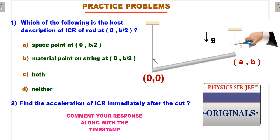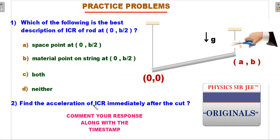The options are: (A) it is a space point — a fixed point at (0, b/2) in space; (B) it is the material point on the string at that location; (C) it is both — it doesn't matter whether you describe it as a space point or a material point, the property of ICR remains the same; or (D) neither of the two descriptions is correct and you can suggest some other description for the ICR of the rod.